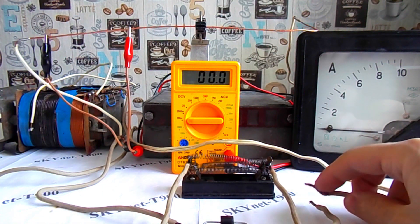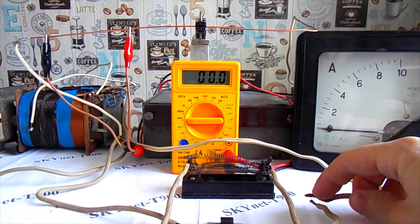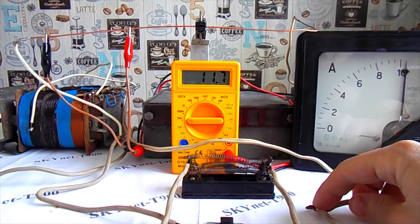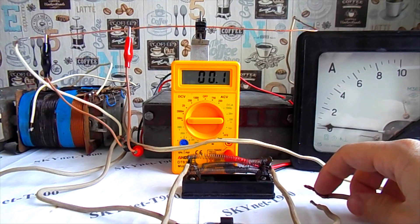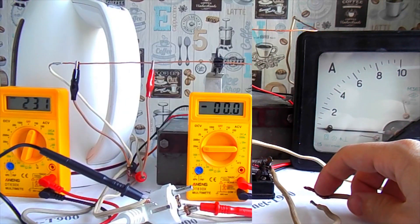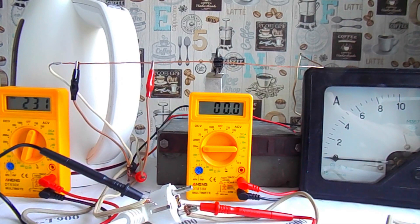Then I increased the voltage so that at the same load, the current became more. The multimeter shows 11.5 amperes, and the ammeter needle went off scale. Here I plugged everything into an outlet. I will measure the current of the kettle.